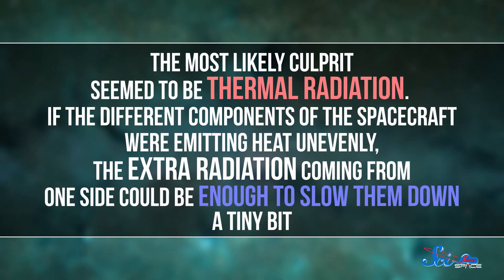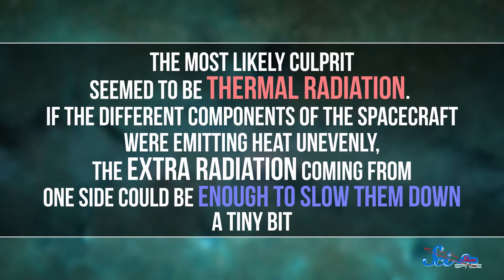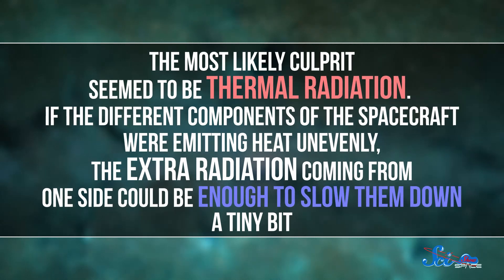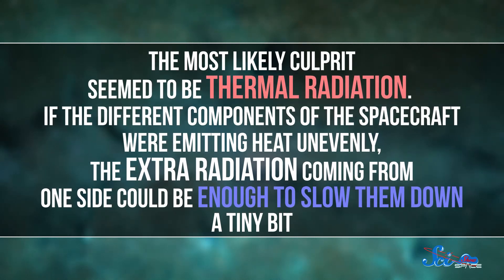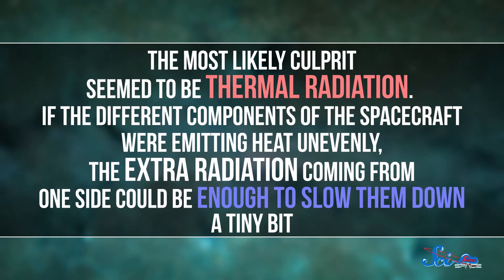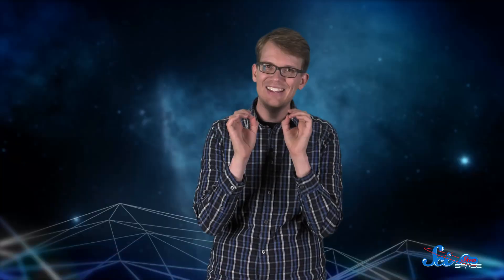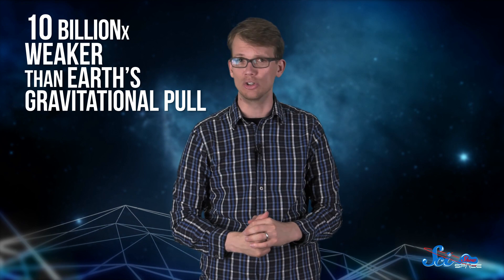The most likely culprit seemed to be thermal radiation. If the different components of the spacecraft were emitting heat unevenly, the extra radiation coming from one side could be enough to slow them down just a tiny bit. And when I say tiny, I mean tiny. Each Pioneer probe was being slowed by a force that was about 10 billion times weaker than the Earth's gravitational pull.